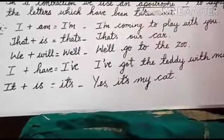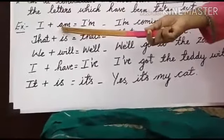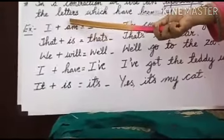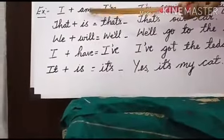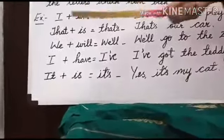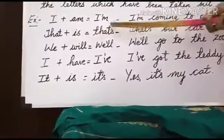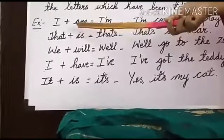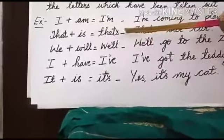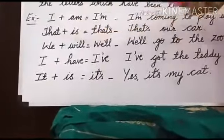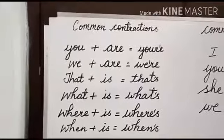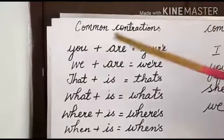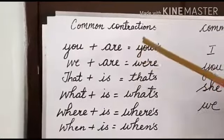We leave out some sounds or letters in a contraction. For example, in 'I'm' the letter 'a' is removed and in that place an apostrophe is placed, and these two words become 'I'm'. Contractions are a combination of two words: 'I' plus 'am' is 'I'm', 'that' plus 'is' is 'that's' — in this word the letter 'i' is removed and an apostrophe is placed. Similarly we have 'we'll', 'I've', and 'it's'.